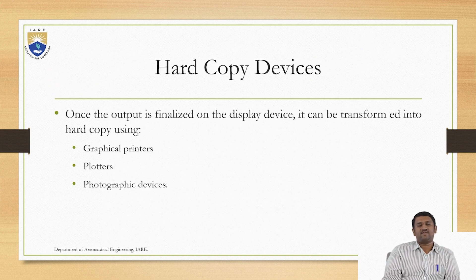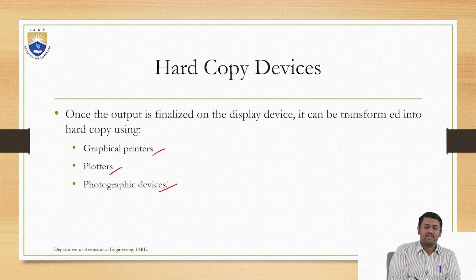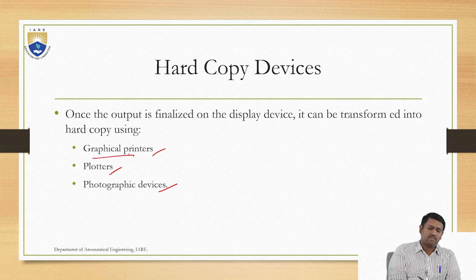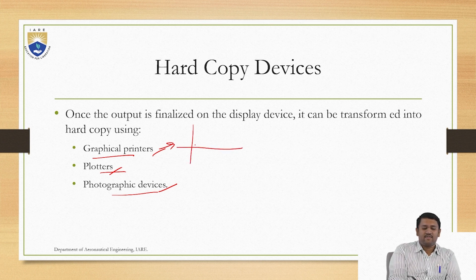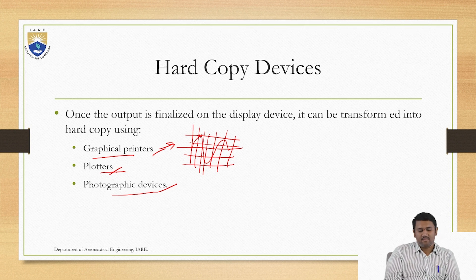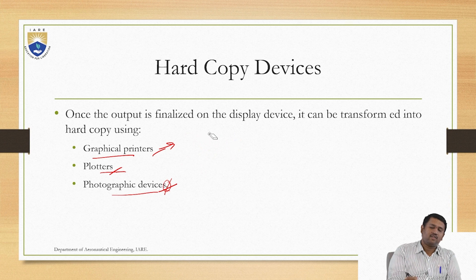First, let us come to hard copy devices — which are graphical printers, plotters, as well as photographic devices. Once you are satisfied with your work on the display and your product is looking good, you are supposed to take a printout or get a hard copy using graphical printers, plotters, or photographic devices. A graphical printer generates a graph based on the data you acquire. Based on the coordinate system that you define or the machine automatically takes, you get a graph plot. Plotters also do the same. The last is photographic devices, which give you a clear picture under a graphical scale — 2D or color — in hard copy.